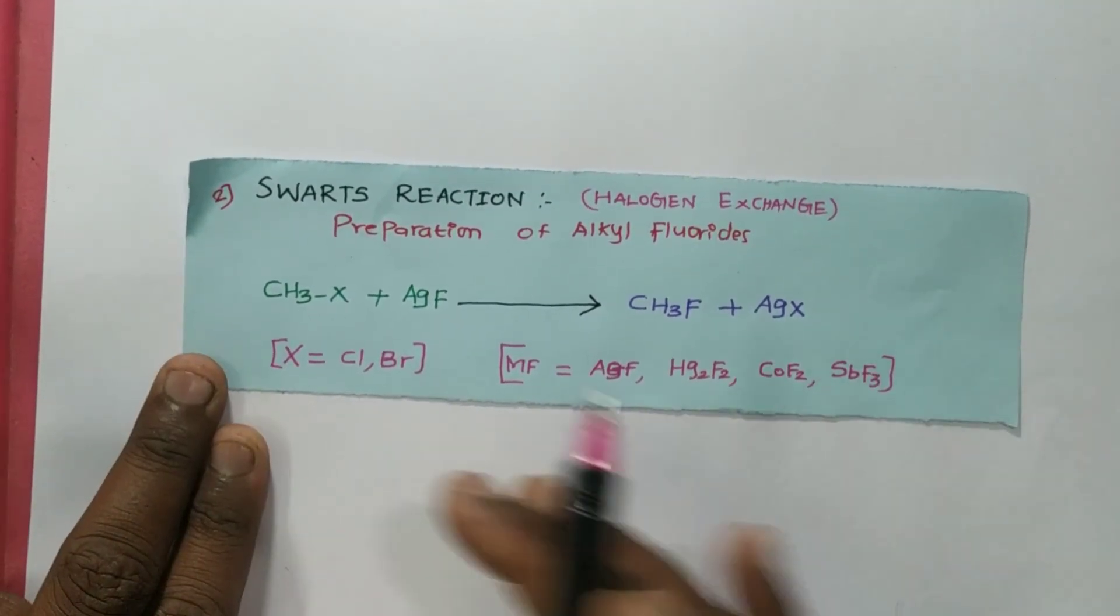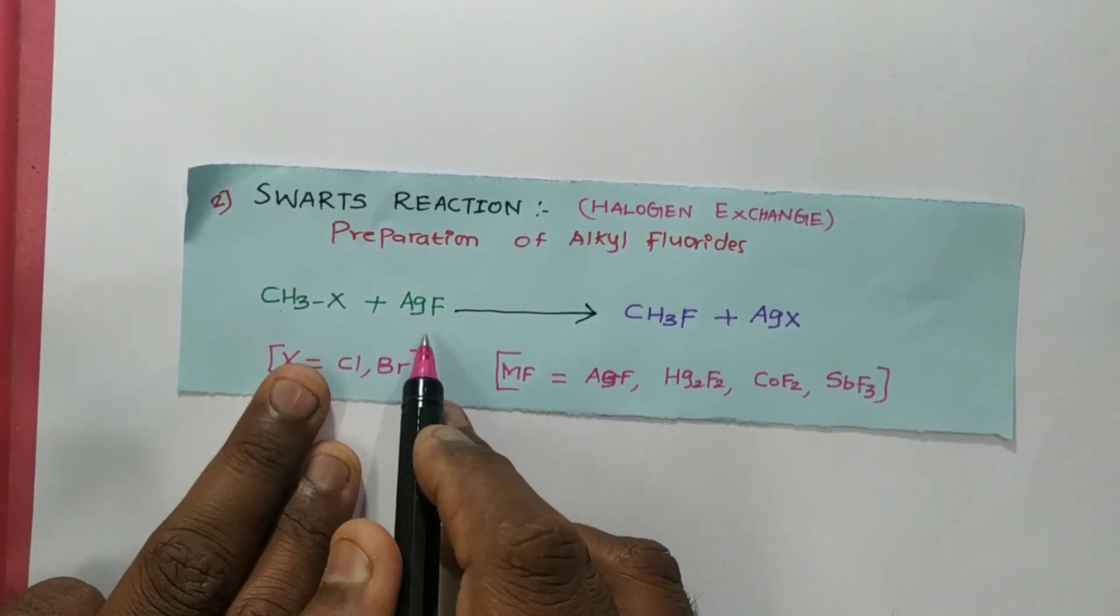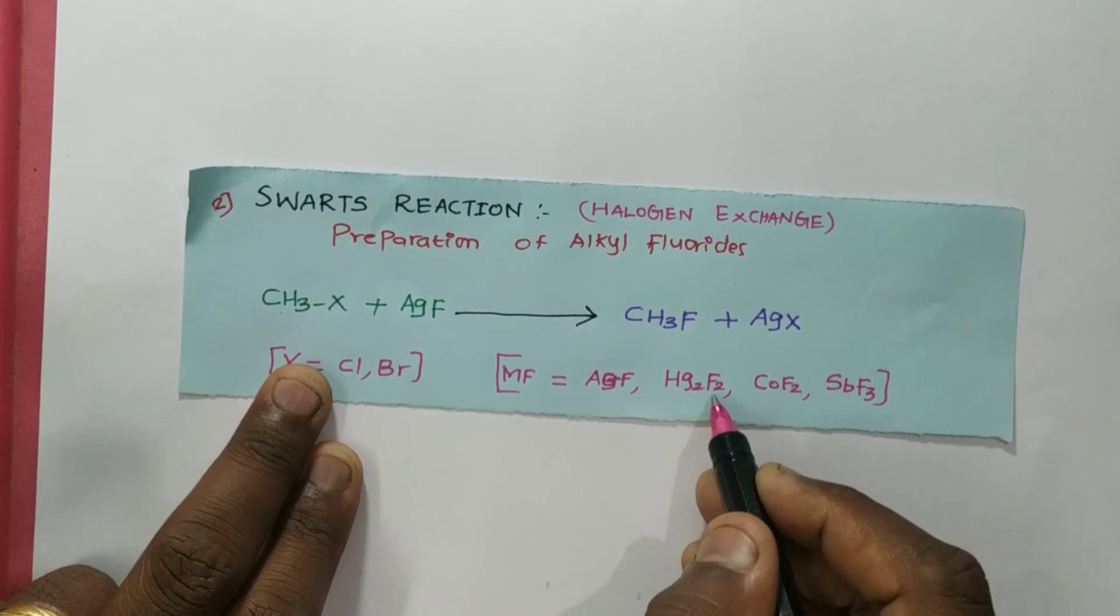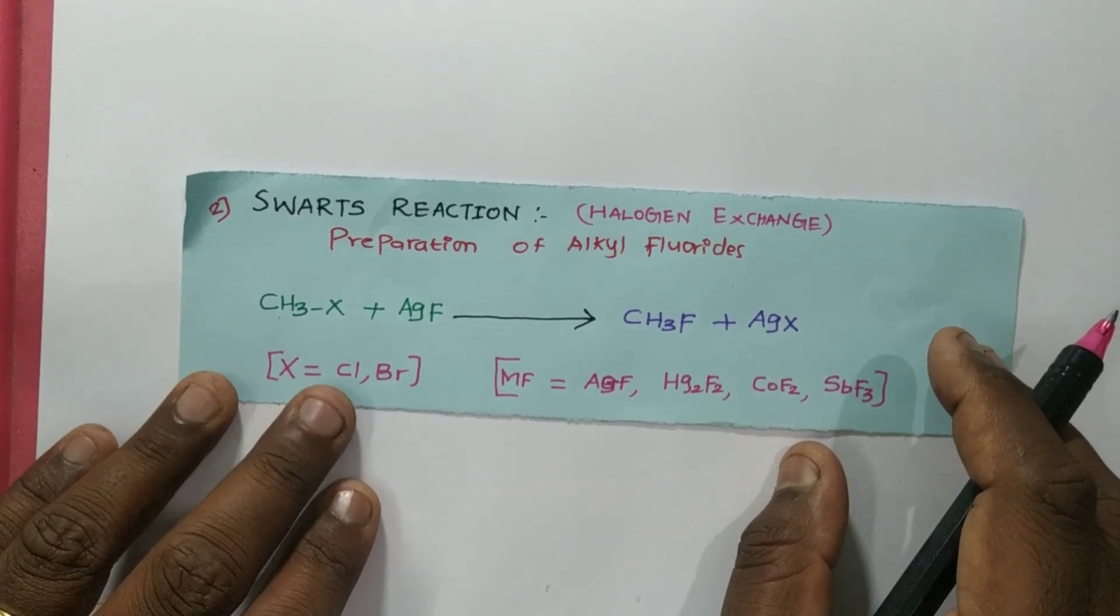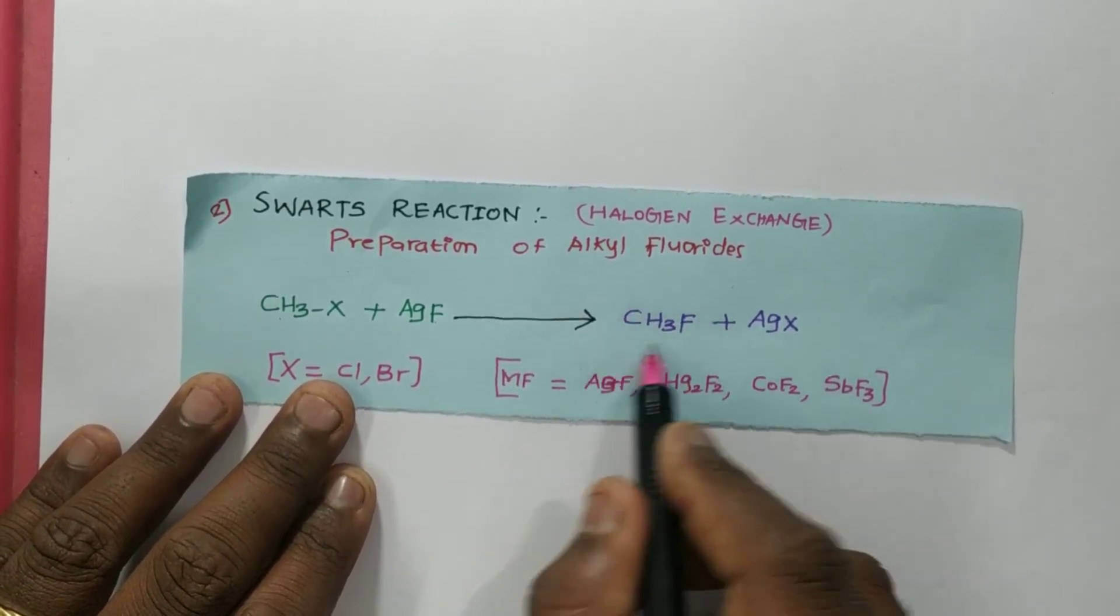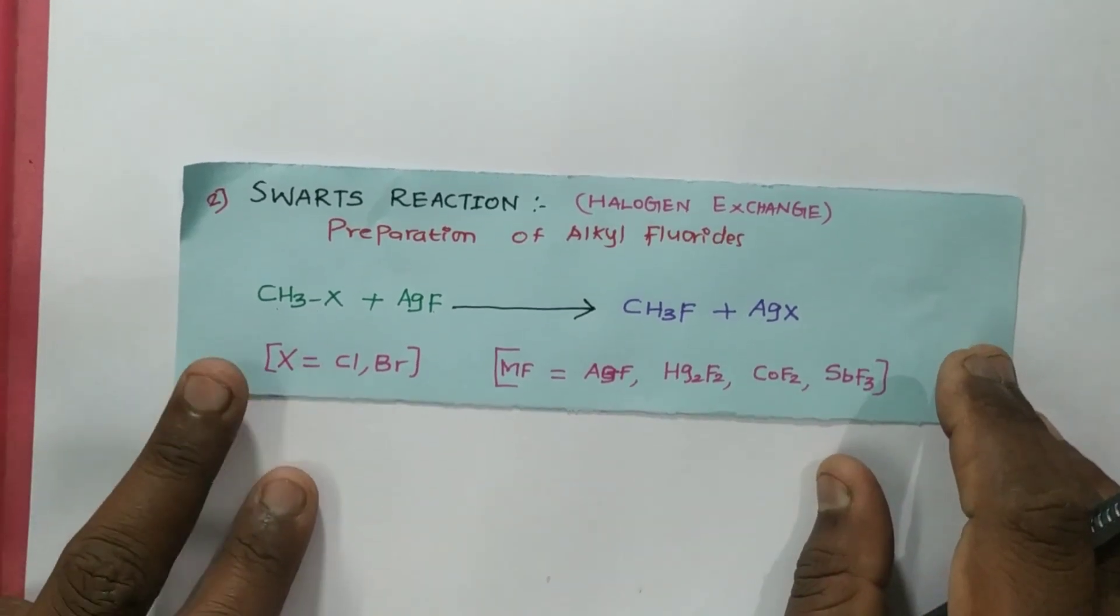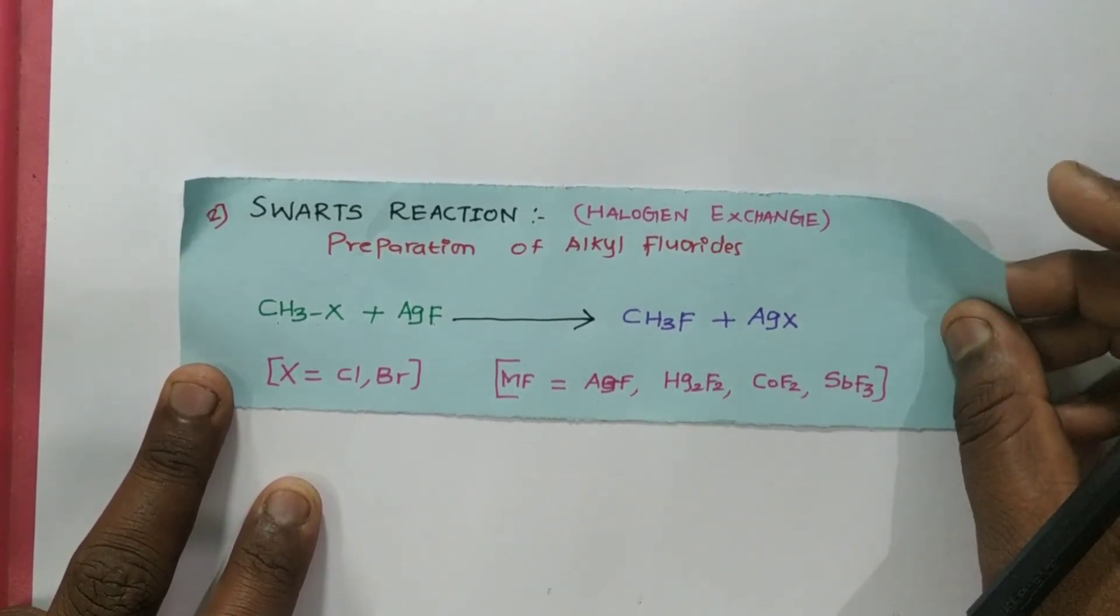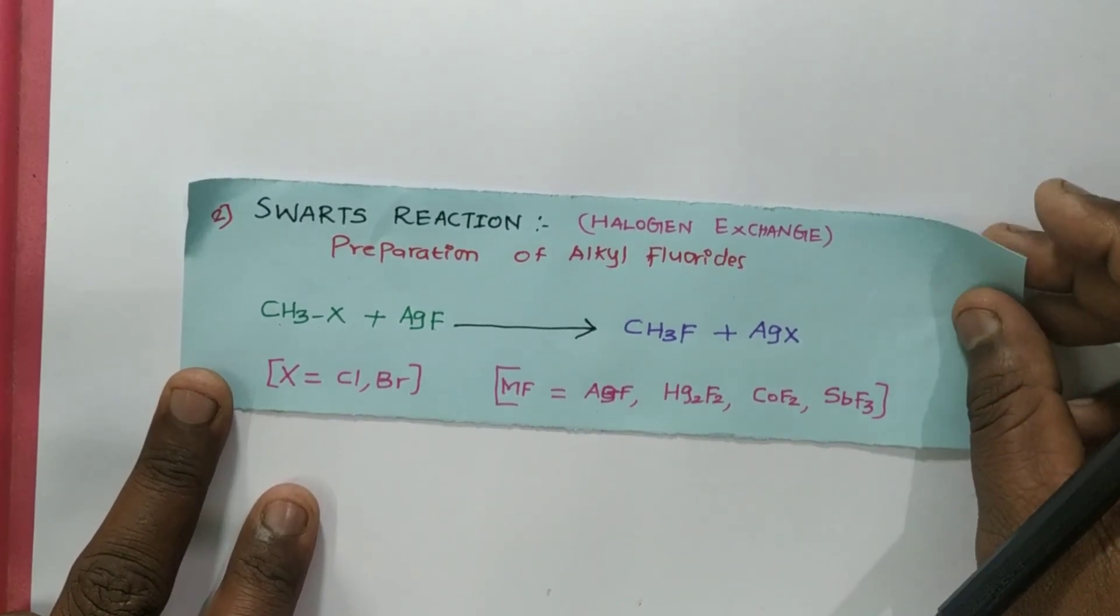Alkyl halide will be reacting in presence of metallic fluorides. The metallic fluorides may be silver fluoride AgF, Hg2F2, CoF2, or SbF3. These may be used as metallic fluorides to conduct this reaction. The halogen can be exchanged and I will be getting alkyl fluoride along with metal halides. This is a very simple halogen exchange reaction used to prepare alkyl fluoride.